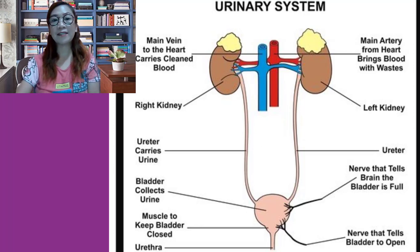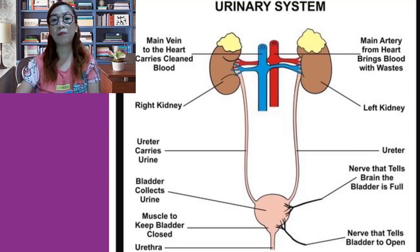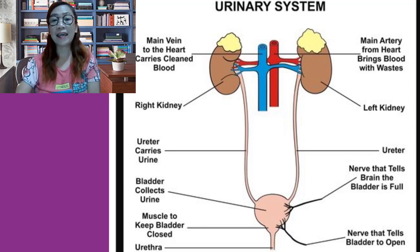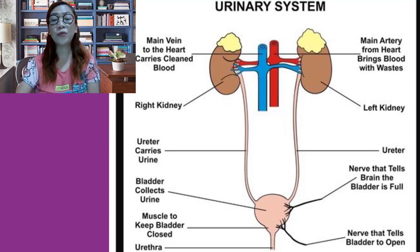The urinary system works with the lungs, skin, and intestines to maintain the balance of chemicals and water in the body. Adults eliminate about 27 to 68 fluid ounces, which is equivalent to 800 to 2,000 milliliters per day, based on a typical daily fluid intake of 68 ounces or 2 liters. Other factors in urinary system function include fluid loss through perspiring and breathing.